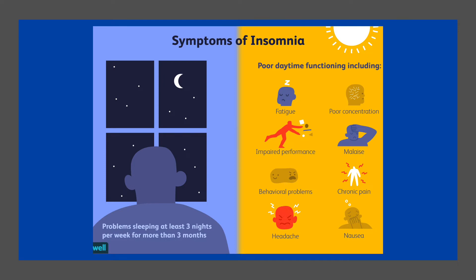In medicine, insomnia is widely measured using the Athens Insomnia Scale, measured using eight different parameters related to sleep and represented as an overall scale which assesses an individual's sleep pattern. A qualified sleep specialist should be consulted for diagnosis. Past medical history and a physical examination need to be done to eliminate other conditions. After all conditions are ruled out and a comprehensive sleep history is taken — including sleep habits, medications, alcohol consumption, nicotine and caffeine intake, comorbid illnesses, and sleep environment — a sleep diary is often used to track individual sleep patterns.